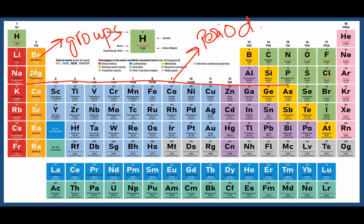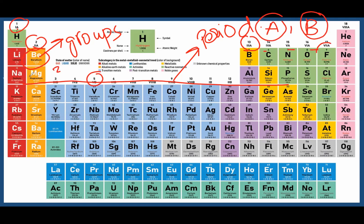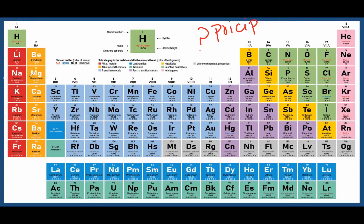Elements are placed in groups and periods according to specific criteria. The valence electrons of an element determine which group it belongs to. For example, beryllium has 2 valence electrons, so it is in group 2; fluorine has 7 valence electrons, so it is in group 7. Elements are placed in periods according to their highest principal quantum number. For example, calcium has a highest principal quantum number of 4, so it is in period 4.